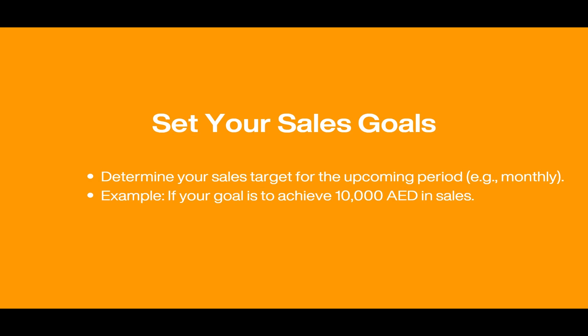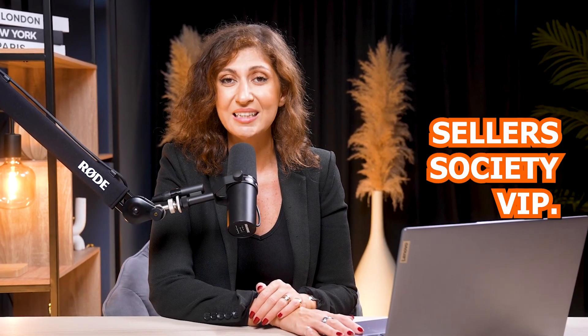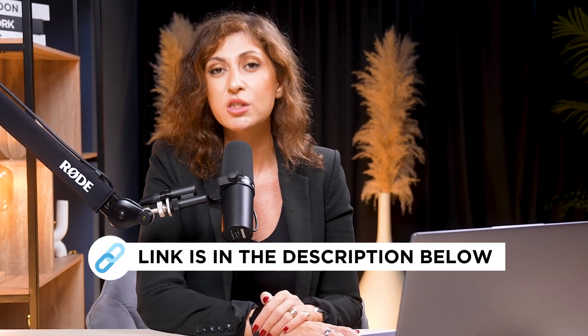So as an example for this video, let's say your target is to generate 10,000 dirhams in sales per month. The next step would be to determine your target ACOS or your break-even ACOS. ACOS is better known as advertising cost of sale. If you are unsure of how to determine your ACOS, you can find out more information in our VIP community, Sellers Society VIP — more information found in the description box of this video.